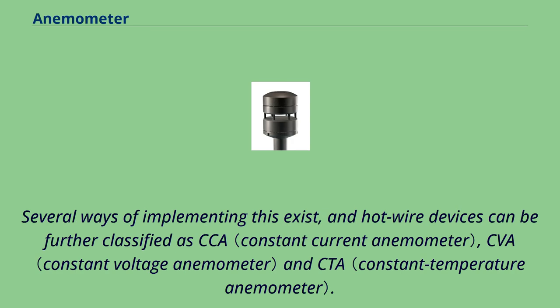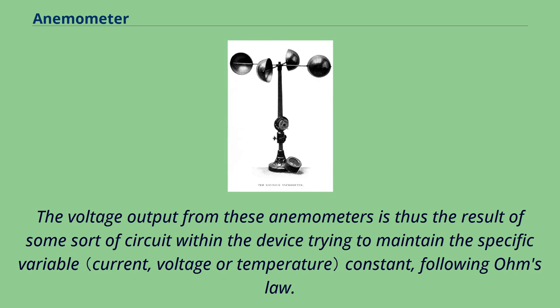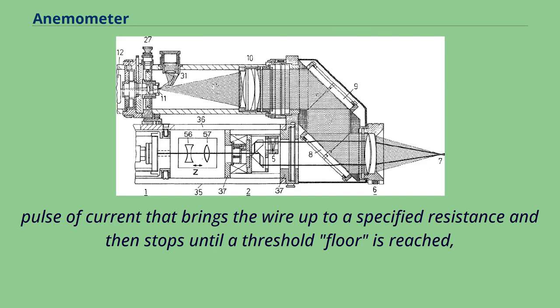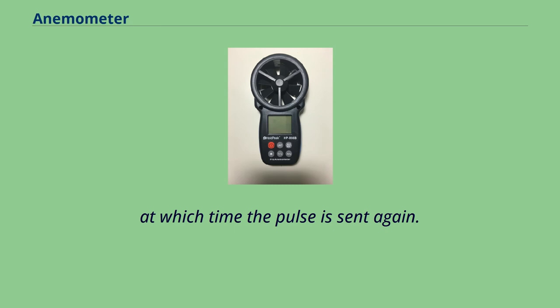Several ways of implementing this exist, and hot-wire devices can be further classified as CCA, CVA, and CTA. The voltage output from these anemometers is thus the result of some sort of circuit within the device trying to maintain the specific variable constant, following Ohm's law. Additionally, PWM anemometers are also used, wherein the velocity is inferred by the time length of a repeating pulse of current that brings the wire up to a specified resistance and then stops until a threshold floor is reached, at which time the pulse is sent again.